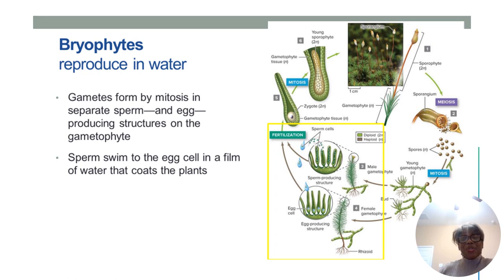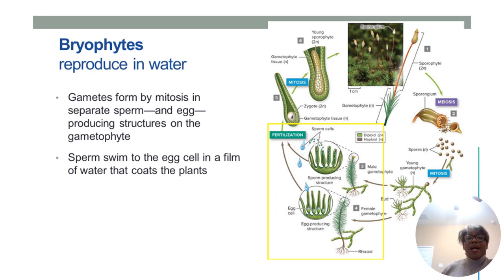Bryophytes reproduce in water — water plays a vital role in their reproductive process. The gametes formed by mitosis include separate sperm and egg cells. The sperm, in order to fertilize the egg, actually swims to the egg cell in a film of water that coats the plant. So if asked how bryophytes reproduce: they reproduce in water and the sperm swims to the egg.